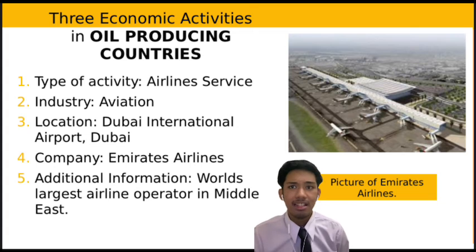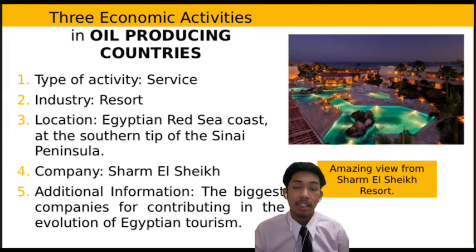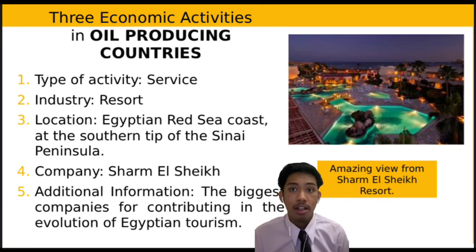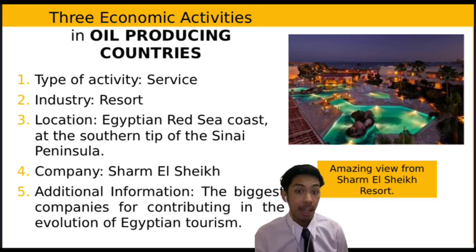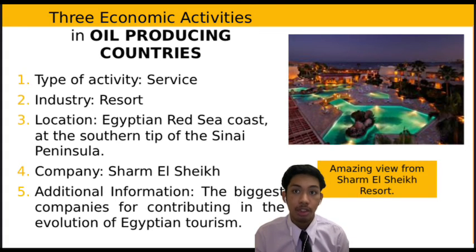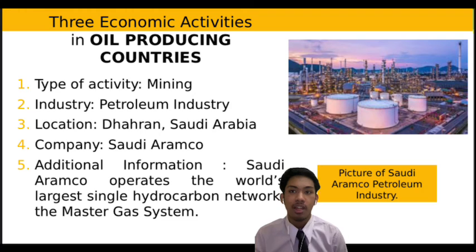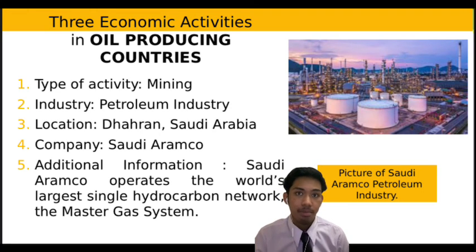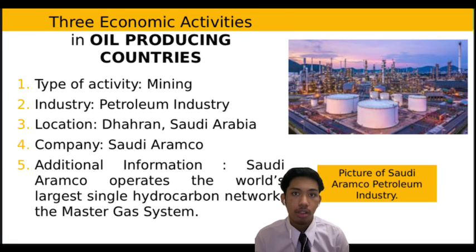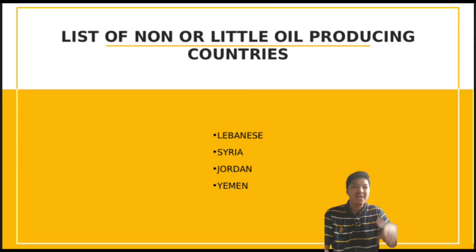The first economic activity in oil-producing countries is airline services, or the aviation industry. We all know the world's largest airline operator in the Middle East is Emirates Airline, founded in Dubai. The next economic activity is resort services — the tourism industry — taking place in Egypt, led by the company Sharm El-Sheikh, the biggest company contributing to Egyptian tourism. Lastly, the mining or petroleum industry is located in Saudi Arabia, led by Saudi Aramco, which operates the world's largest single hydrocarbon network — the Master Gas System.